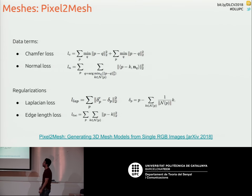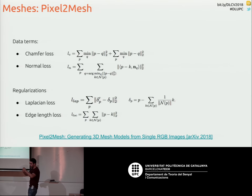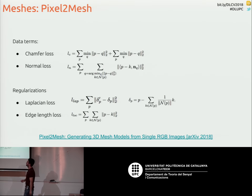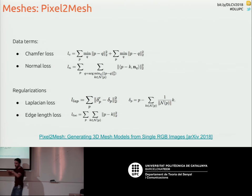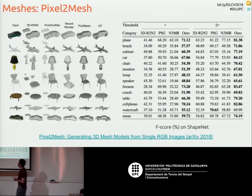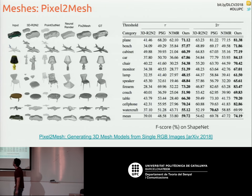The method uses the Chamfer loss introduced in the previous work, plus additional losses for stable shapes. A normal loss supervises the surface normals — the perpendicular vector to the surface. A Laplacian loss regularizes curvature, and an edge length loss prevents points from drifting too far from the object. Results compare the voxelization method, the point cloud method after meshing, and this graph-based method.